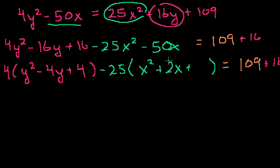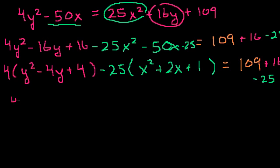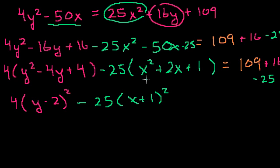For the x terms, half of 2 is 1, and 1 squared is 1. We didn't add just 1 to the left-hand side — we added 1 times minus 25, so we put minus 25 on the right-hand side as well. The y terms factor to 4 times (y minus 2) squared, and the x terms become minus 25 times (x plus 1) squared. On the right: 109 plus 16 minus 25 equals 100.